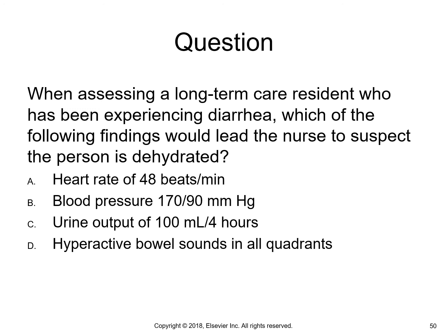Final question: When assessing a long-term care resident who has been experiencing diarrhea, which finding should lead the nurse to suspect dehydration? A: Heart rate of 48; B: Blood pressure of 170/90; C: Hyperactive bowel sounds in all quadrants; D: Urine output of 10 mLs over 4 hours. A heart rate of 48 is bradycardia — dehydration causes tachycardia, so A is incorrect. A blood pressure of 170/90 is hypertensive — dehydration causes low blood pressure, so B is incorrect. Hyperactive bowel sounds indicate overactivity; dehydration causes hypoactive sounds, so C is incorrect. D is correct: 10 mLs over 4 hours is severely reduced — we expect more than 30 mLs per hour, which would be 120 mLs over 4 hours.